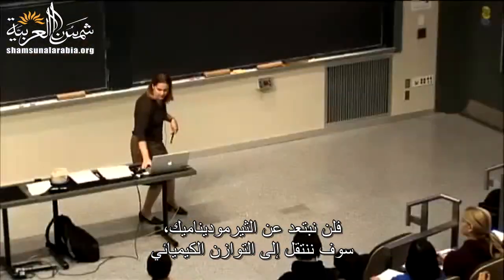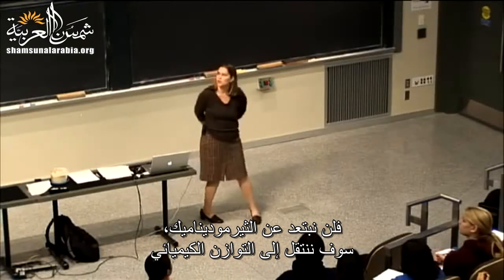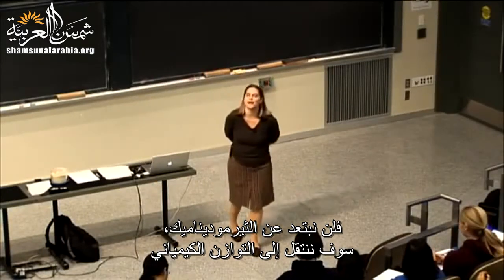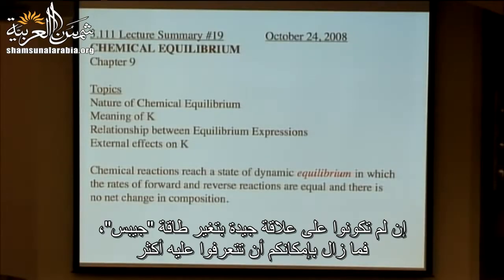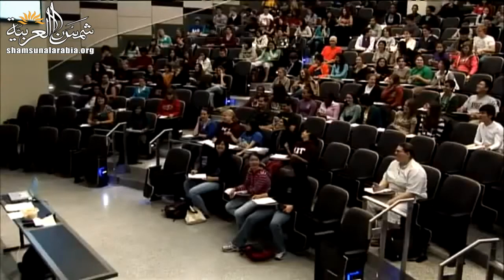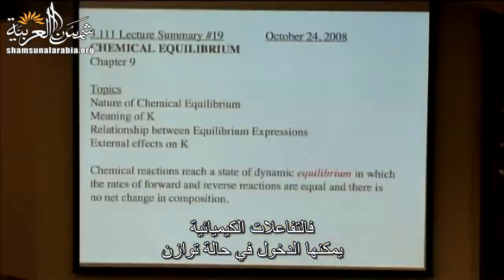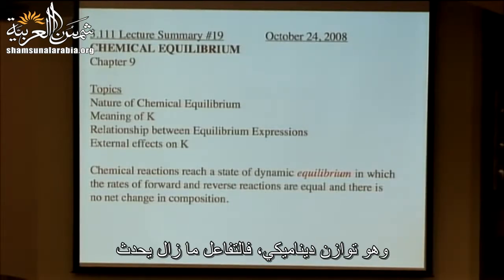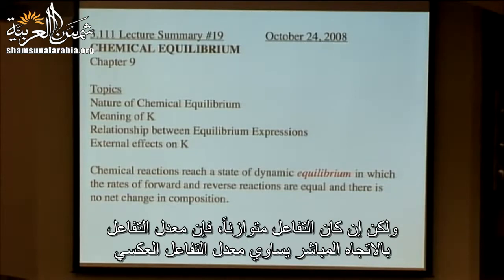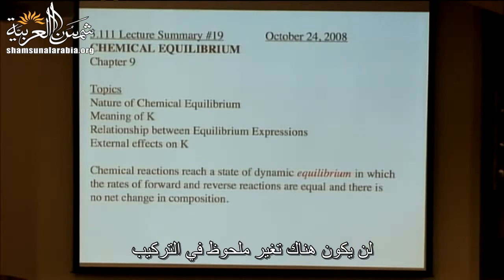We're not going far from thermodynamics — we're going into chemical equilibrium, and we're going to talk a lot about delta G. Chemical reactions can go into a state of equilibrium. It's a dynamic equilibrium — the reaction is still happening, but if a reaction is in equilibrium, the rate of the forward reaction equals the rate of the reverse reaction, so there's no net change in composition.